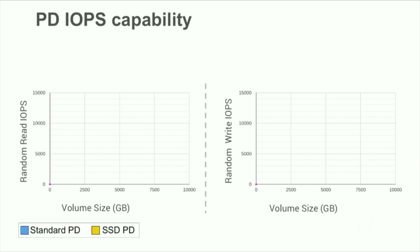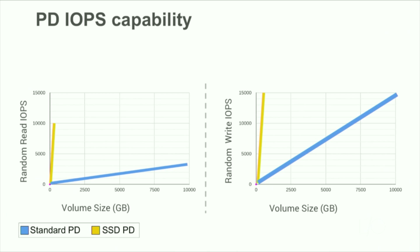With both options, standard and SSD, for both read and write, the more space you buy, the more IOPS you get. But SSD persistent disk grows in IOPS capability much faster than standard PD, which is why it costs more. Each gigabyte of SSD PD gets 20 times the write IOPS of a gigabyte of standard PD and 100 times the read IOPS of a gigabyte of standard PD. These high IOPS numbers are what make SSD PD ideal for transactional workloads like heavily used databases. The SSD PD IOPS grows so fast that they reach the limit of the IOPS that a VM can handle at a relatively low volume size, which is why these graphs have a plateau at the top of the IOPS curve. We're always working to increase the per VM limits, so check the current documentation for the latest numbers.